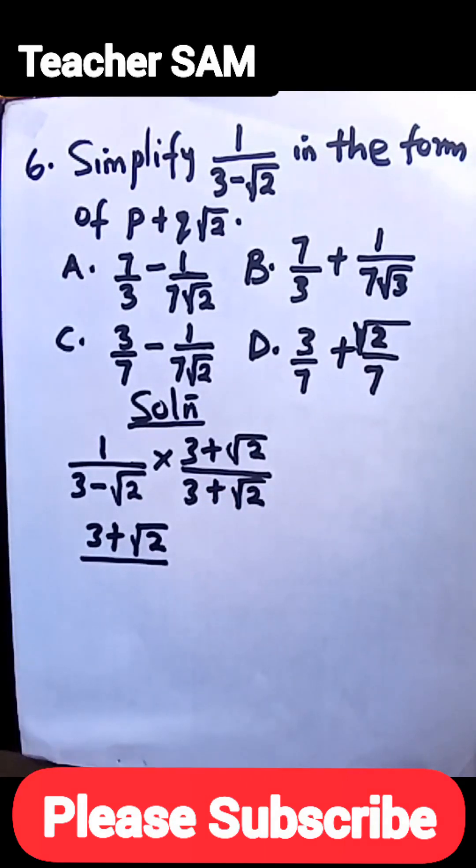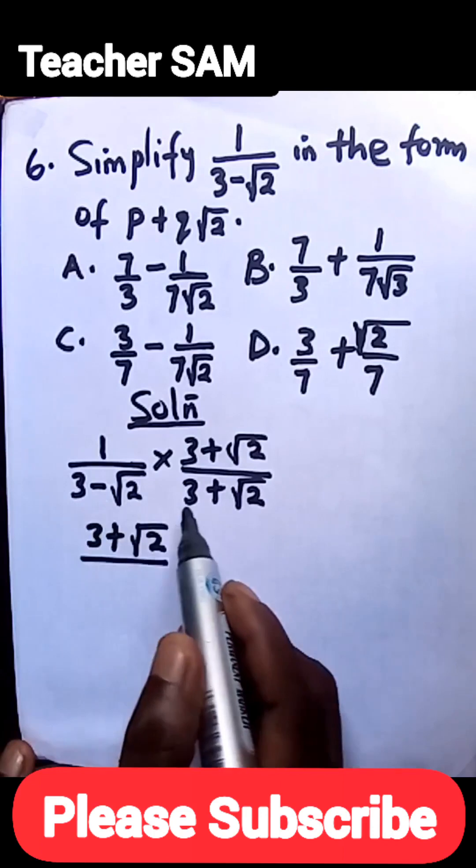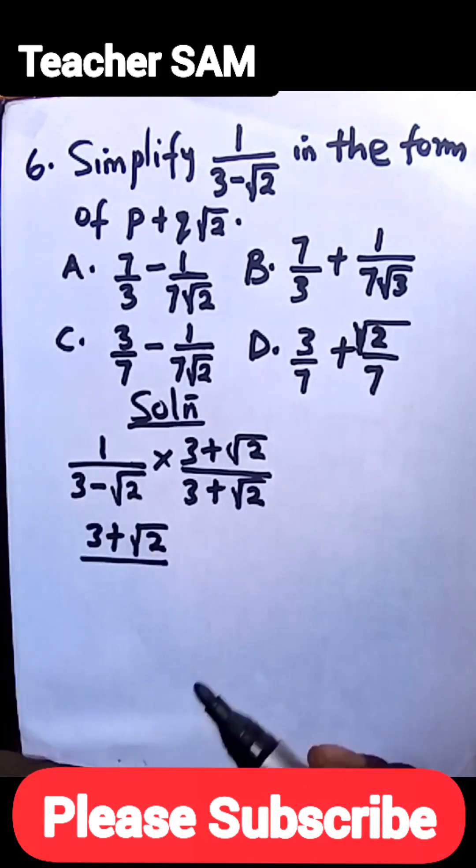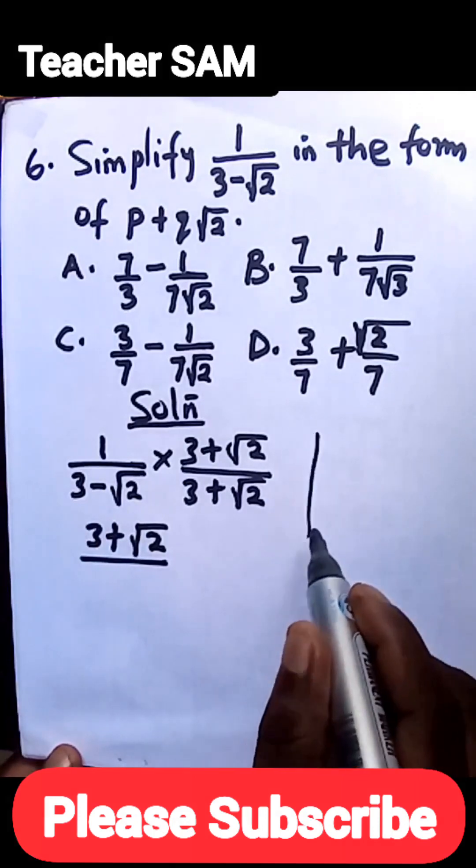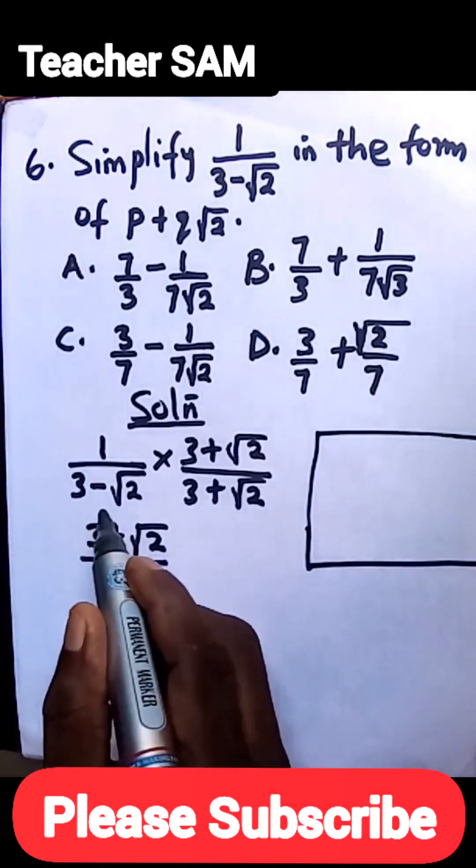Now I'm going to show you something very simple. When we have two surds, one negative and one positive, we can actually use a short form to do that. So let's create a box here to do what I want to show you.